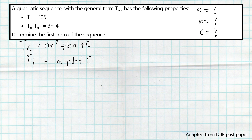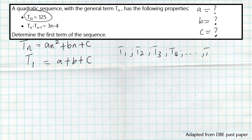The challenge is that we don't have the actual terms — we are only given term 11, which equals 125. We don't know term one, term two, term three, and so on up to term ten. But we are given something very useful in this question.